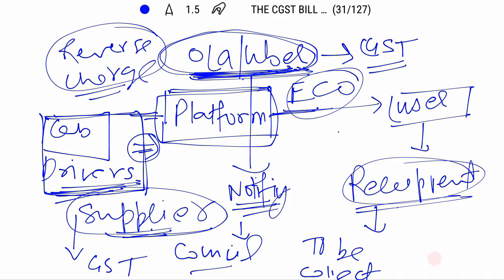But note that the government will notify, by notification, the specified category of services in which Section 9, Subsection 5 shall be applicable. And after applicability, the ECO — Electronic Commerce Operator — shall be willing to pay tax instead of the supplier. In the aggregator model, it is basically a supply of services where the supplier supplies by using the platform of the Electronic Commerce Operator. So here, supplier and Electronic Commerce Operator are two different parties. Section 9, Subsection 5 is applicable. The aggregator model is basically a supply of services under the brand name of the Electronic Commerce Operator. In that case, the ECO shall be liable to pay tax as specified by notification for the category of services. The provisions of this Act shall be applicable to the Electronic Commerce Operator as if he is the supplier liable to pay tax.